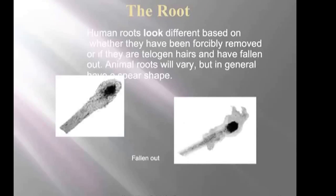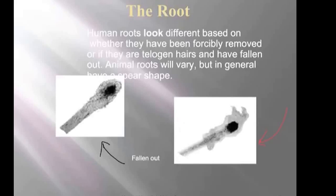The root is going to look different depending on whether the hair fell out or was violently pulled out. Hair that has fallen out versus hair that has been pulled out — the pulled-out hair almost looks like a match that's on fire: the root got ripped out with it, the edges are pulled and torn. Whereas hair that fell out was a much more gentle process. Also, an animal root shape is generally going to be more like a spear — very pointy at the end — whereas human roots are very round.